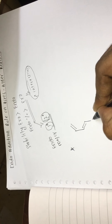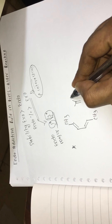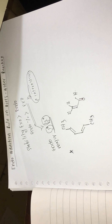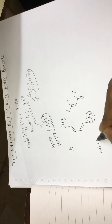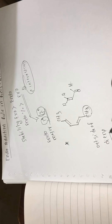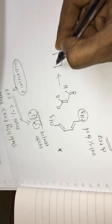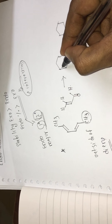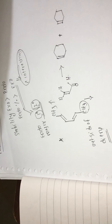In the first example, we have a diene with methyl groups here, and we have acrolein as the dienophile. The methyl groups are present outside of the diene — they are coming down and up in the outside direction.